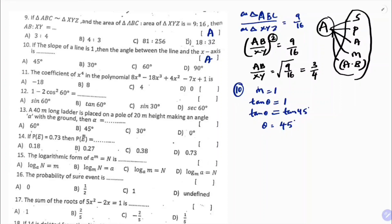Question 11: the coefficient of x⁴ in the polynomial 8x⁸ − 18x³ + 4x² − 7x + 1. Since there is no x⁴ term in this polynomial, the coefficient is 0.